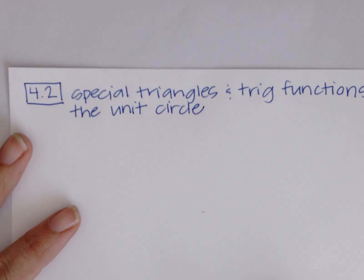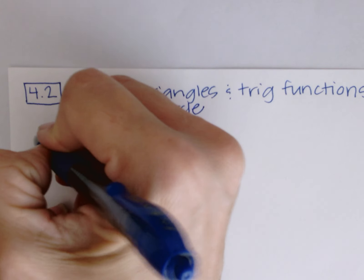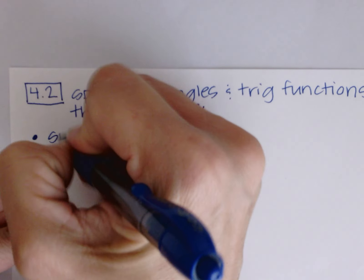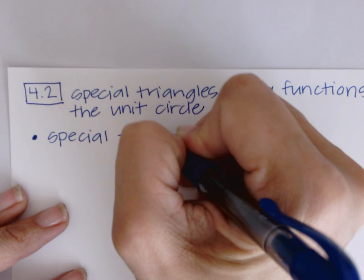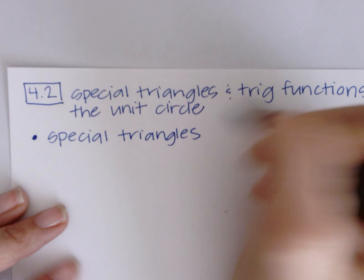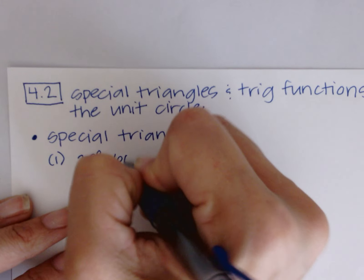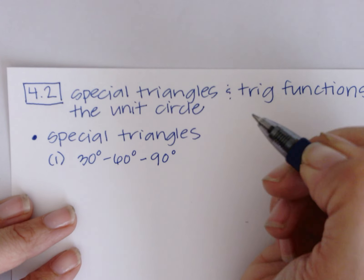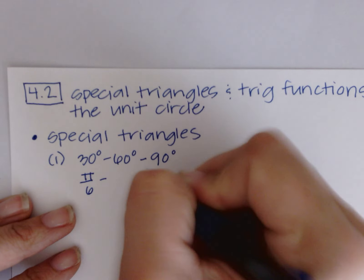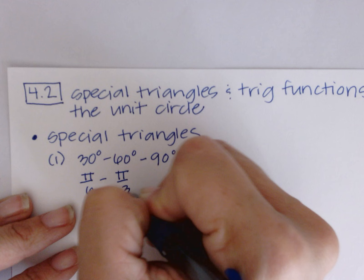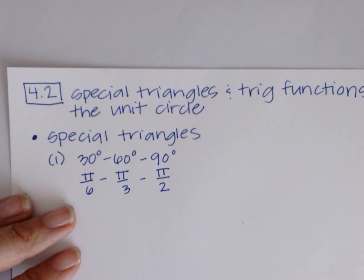The first thing we need to do is review our special triangles from geometry and algebra 2. There are two types of special triangles. The first one is the 30-60-90. Converting to radians: 30 is π/6, 60 is π/3, and 90 is π/2.